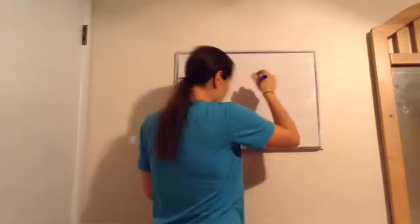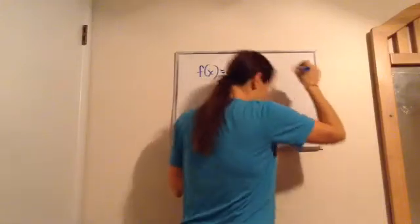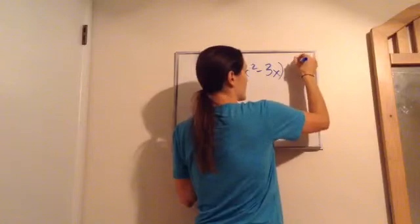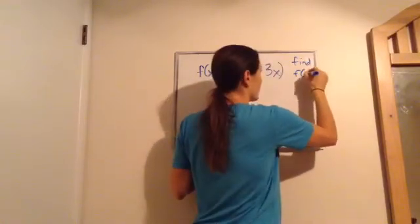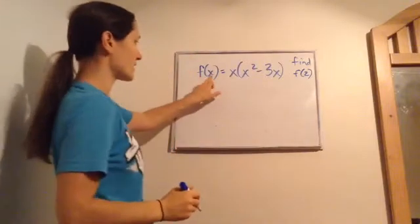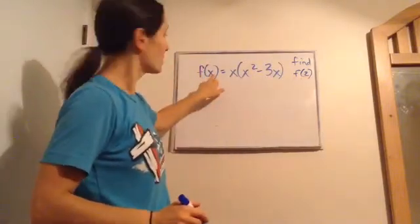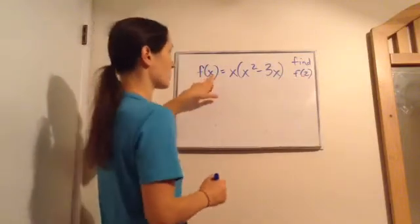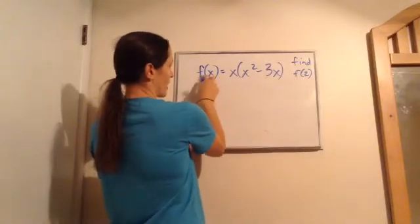And then they say this. F of X equals X, and then they've got X squared minus 3X. And then it says this. Let's find F of 2. Now, if you can see, F of 2 is F of X. And so what is my X? 2.